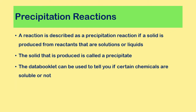Now, precipitation reactions. A reaction is described as a precipitation reaction if a solid is produced from reactants that are solutions or liquids. So if we mix two solutions together and it goes cloudy, or we get an obvious solid being produced, that is a precipitation reaction. We call the solid that forms a precipitate.